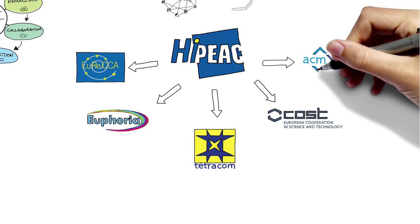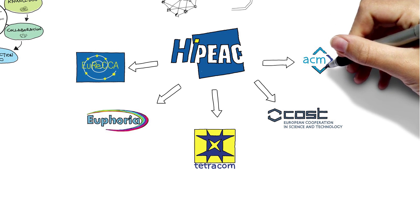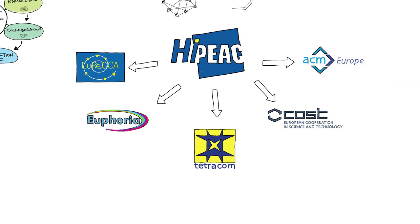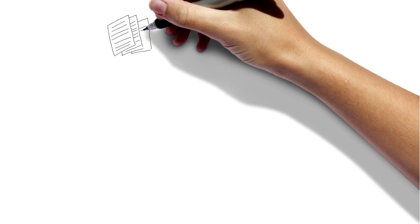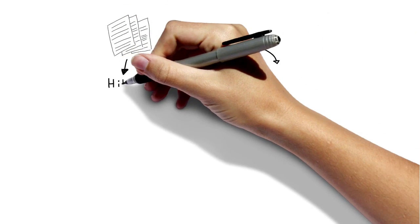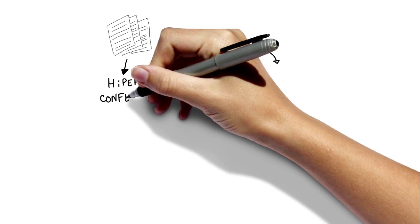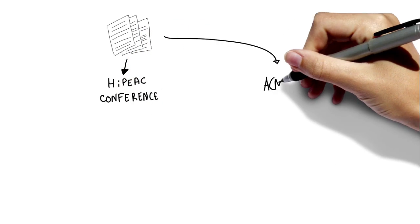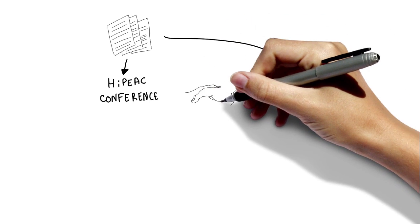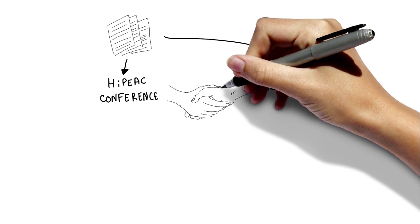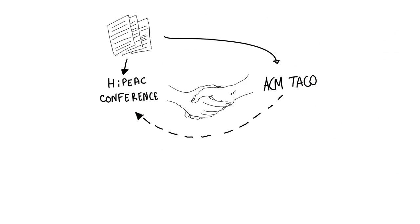Beyond research, the network is also innovating in the field of academic publications on computing systems. In 2011, we decided to outsource the paper selection process for the HiPEAC conference to ACM Transactions on Architecture and Code Optimization. At the same time, we transformed the conference from a publications event into a pure networking event.